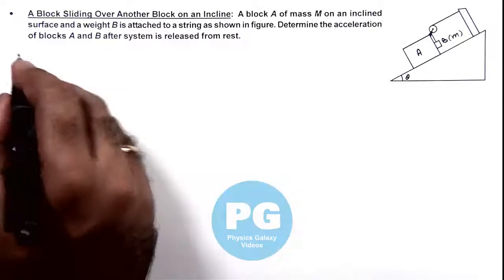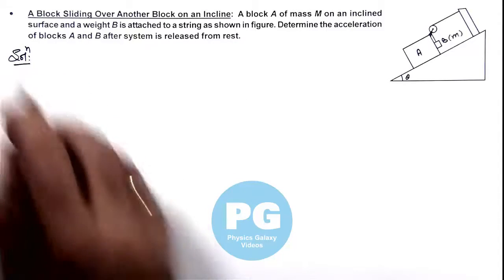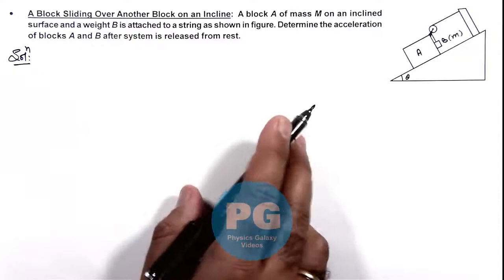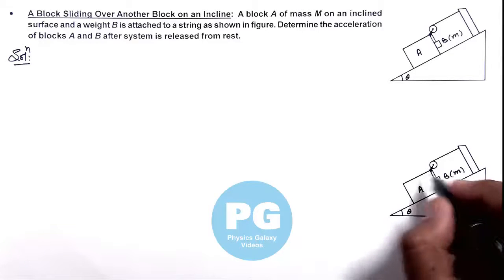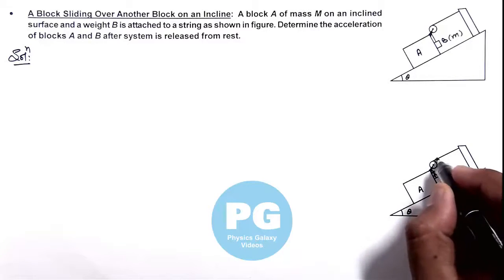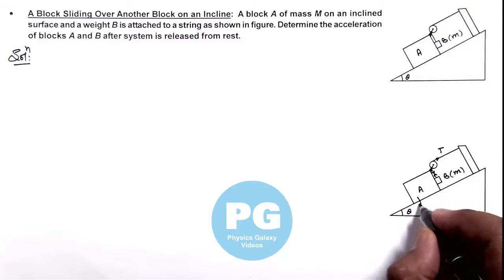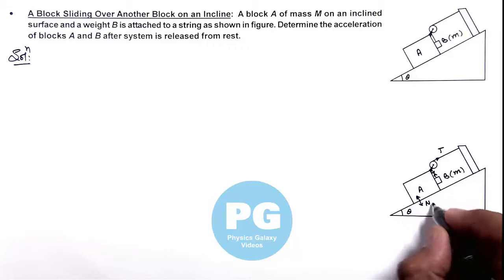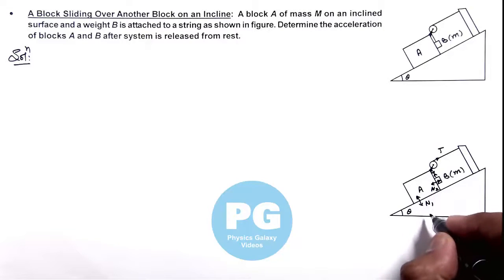First, we distribute the forces. Looking at the forces in the figure: if the tension in the string is T, then normal reaction N1 will act on block A due to the incline, and another normal reaction between block A and block B is N2.